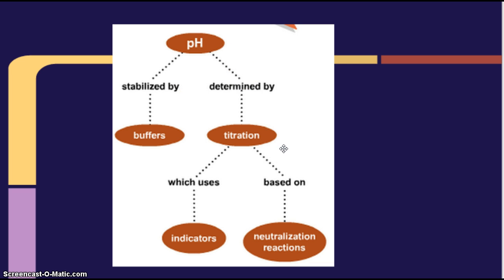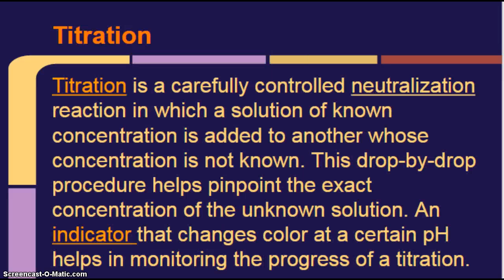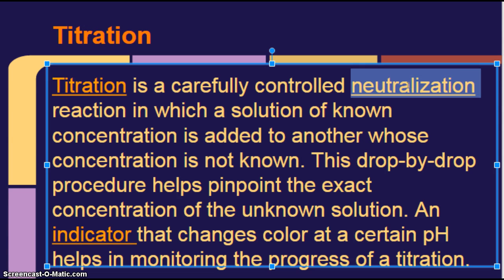We can determine pH by titration, which uses indicators and is based on neutralization reactions, which has to do with the lab for this unit. Titration. Titration is a carefully controlled neutralization reaction. Okay, neutralization means you have what two things? You start with an acid and a base. And what do they make? Water and a salt. All right. So titration is a carefully controlled neutralization reaction in which a solution of known concentration is added to another whose concentration is not known. This drop-by-drop procedure helps pinpoint the exact concentration of the unknown solution.